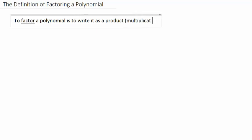We want to look at the definition of factoring as it applies to polynomials. To factor a polynomial is to write it as a product. In other words, a product means write it as multiplication. Let's look at some examples of polynomials.